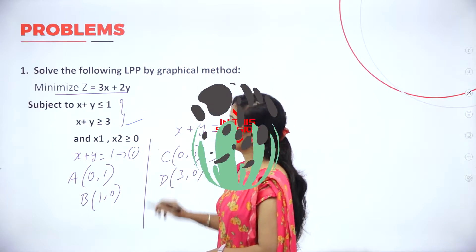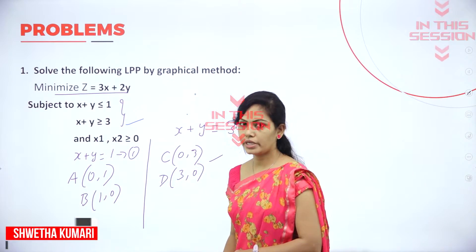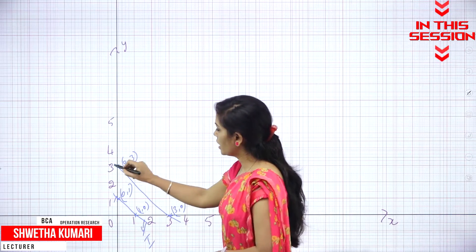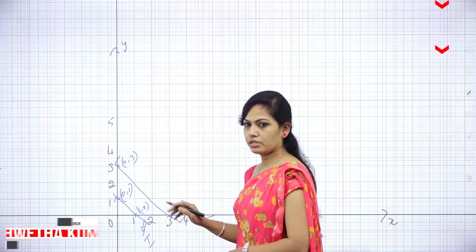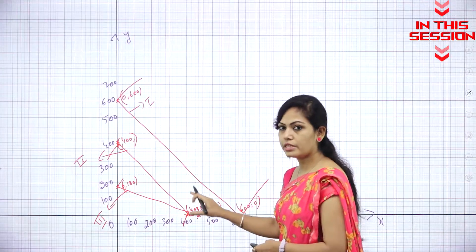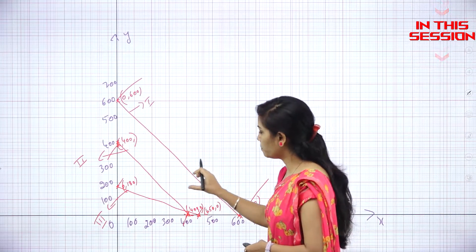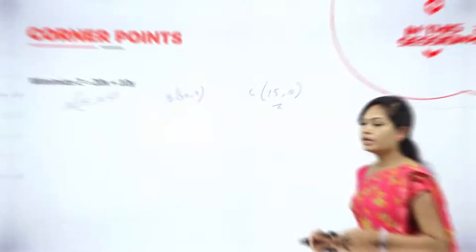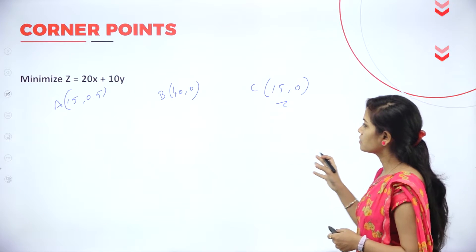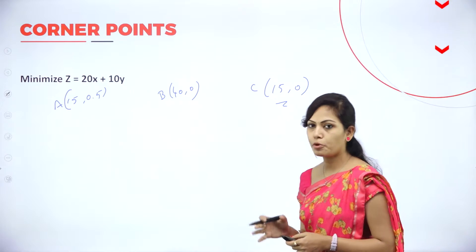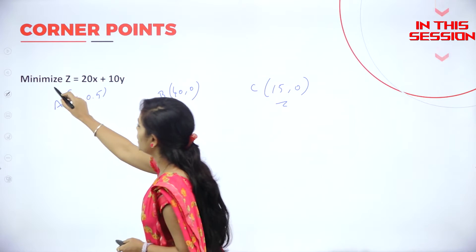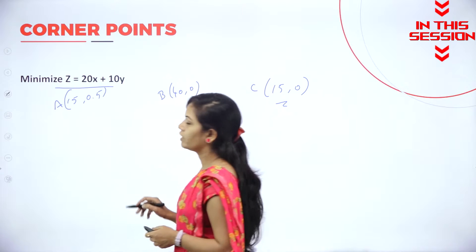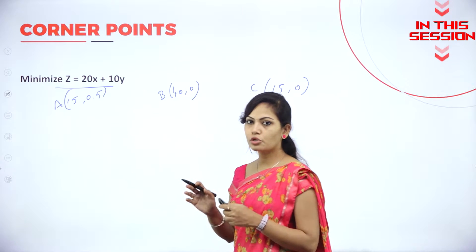The second constraint is greater than or equal to 3. Greater than or equal to means it is above the region. So here there is no common point connected to each other. Using these three corner points we can find the minimum value of this solution.